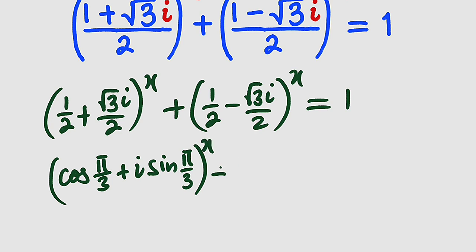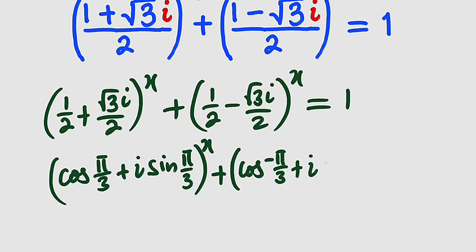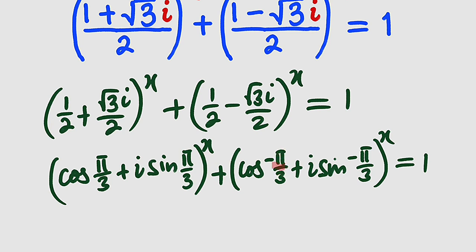Moving to the other parenthesis, we have cosine of negative pi divided by 3, which also gives 1 over 2. You can confirm by pressing cosine of negative pi divided by 3 on your calculator. And sine of negative pi divided by 3 gives us negative root 3 divided by 2.